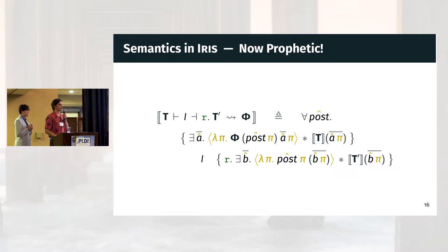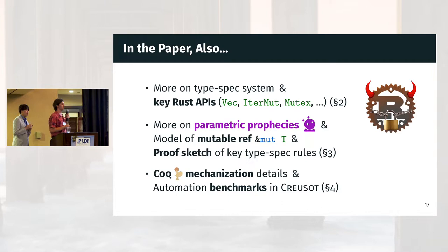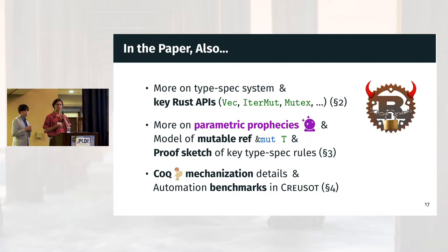If this has made you curious about our work and you have an itch to learn more technical details and see more Greek symbols, we encourage you to read our paper. In the paper, we go through some of the actual proofs for rules such as mutable borrows, and we also detail more of our examples like mutable iterators, mutexes, cells, etc. If you have any further questions, we'd be happy to answer them now.